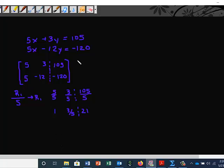That's our new row one. We'll write it here: 1, 3/5, 21. And then our second row will stay the same.